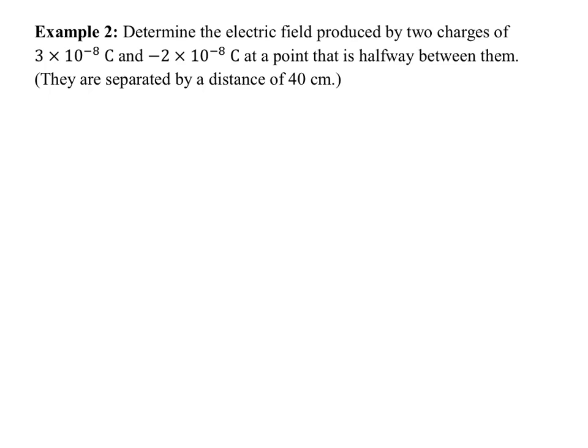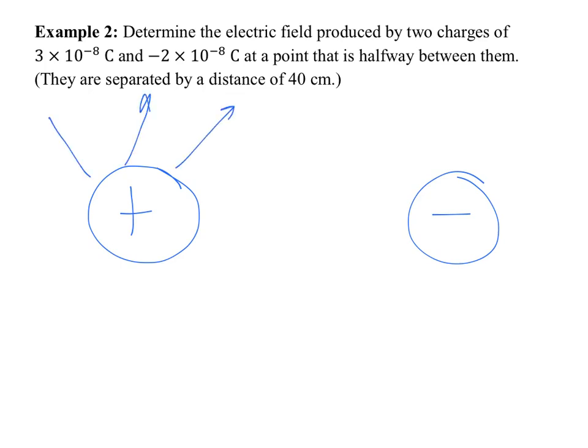We want to determine the electric field produced by two charges — one positive, one negative. So we have two sources now. This is like sample C when we looked at the field lines. The positive source is stronger than the negative source, and we want to figure out what the field is halfway between them. Go ahead and draw a positive source here and a negative source here. From the positive source, the field lines should be drawn away, and from the negative source, field lines should be drawn toward.